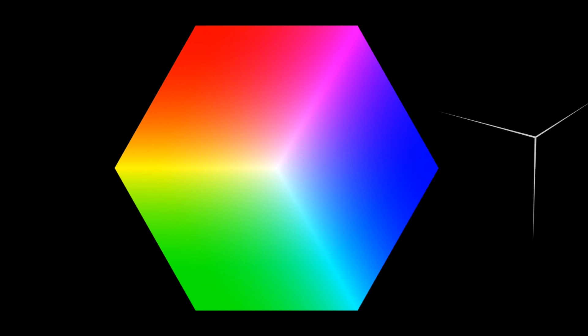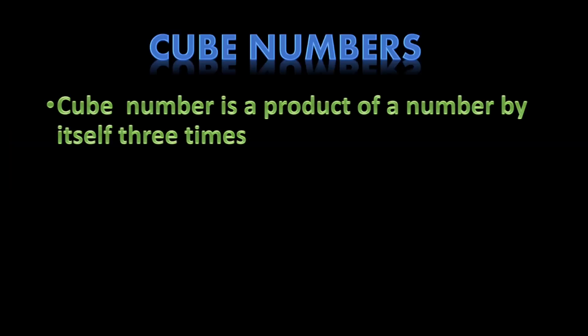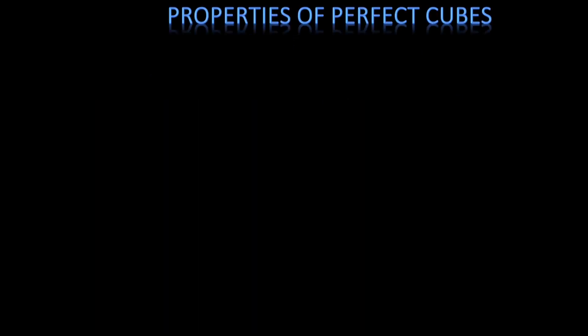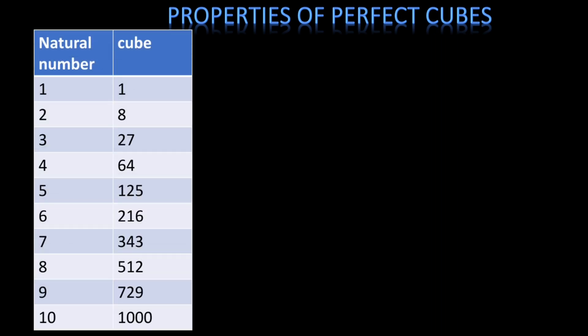Since all three dimensions are equal, to get the volume we find the product of each side three times — that is a cube number. So a cube number is the result when we get the product of a number by itself three times. When that resulting number is a natural number, it is called a perfect cube.